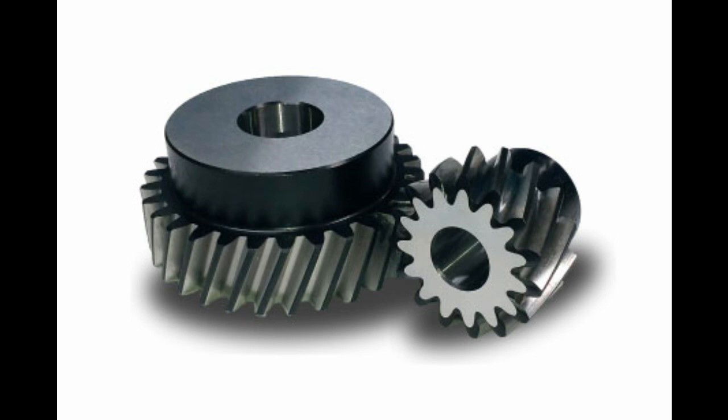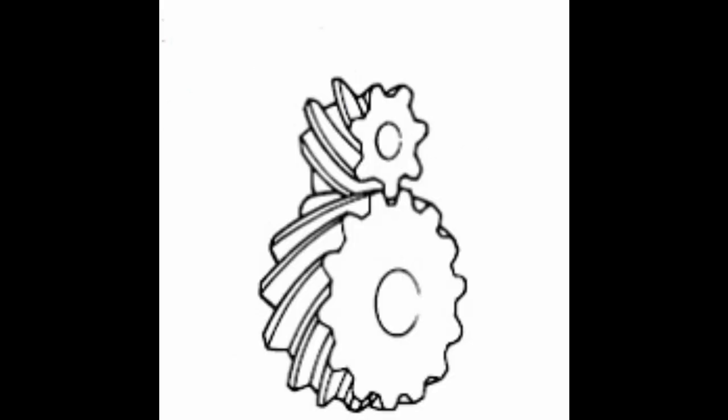Helical gears are used with parallel shafts, similar to spur gears, and are cylindrical gears with winding tooth lines. They have better tooth meshing than spur gears and are superior in quietness and can transmit higher loads, making them suitable for high-speed applications. When using helical gears they create thrust force in the axial direction, necessitating the use of thrust bearings. Helical gears come with right-hand and left-hand twist, requiring opposite-hand gears for a meshing pair.